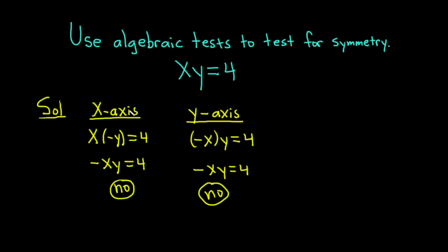To recap: to test for x-axis symmetry, you replace y with negative y. If you get the same equation, the answer is yes; if you don't, the answer is no. To test for y-axis symmetry, you replace x with negative x. If you get the same equation, the answer is yes; if you don't, the answer is no.